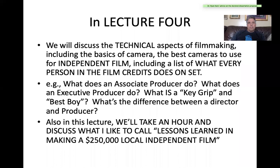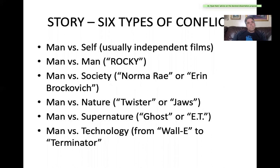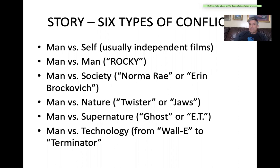First, the six types of conflict before we get to the three types of story structure. Man versus self is usually found in independent films — it's very hard to film someone who's just thinking. Man versus man — Rocky is the obvious example, but it can be any conflict between two people, including all romance films and romantic comedies or dramas.